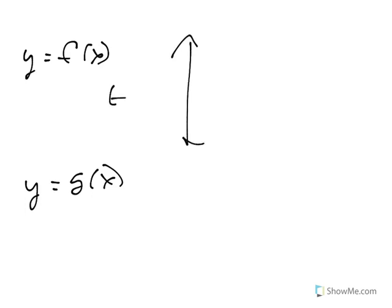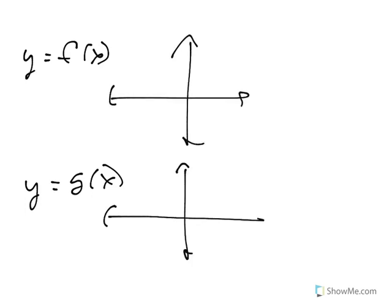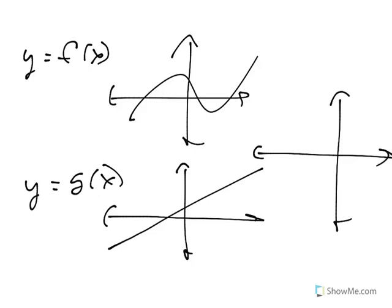The problem with quotient graphs — imagine I have two graphs, some function f of x and a simpler g of x. If I want to combine them into a quotient graph f of x over g of x, a couple of things to observe. Any time f of x is zero, f of x over g of x is also going to be zero. And any time g of x is zero, the quotient graph is going to be undefined.